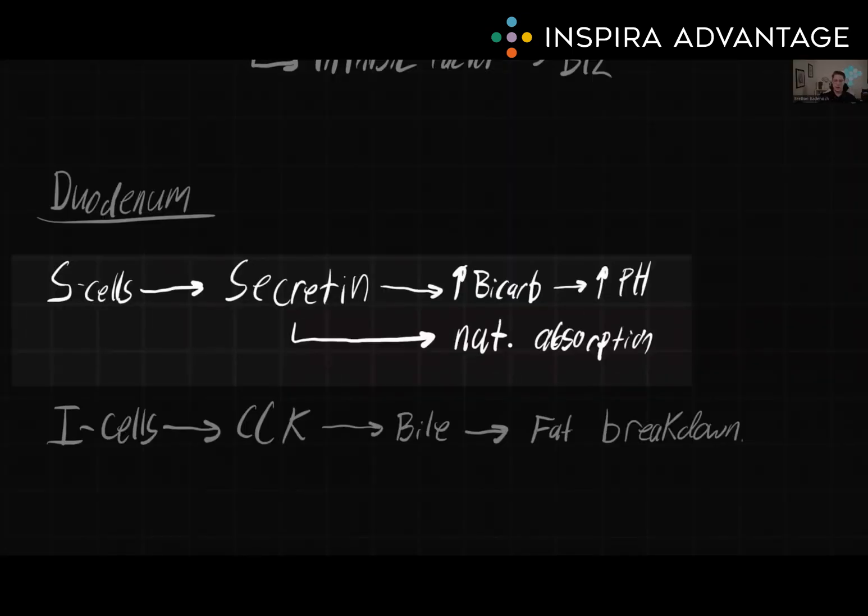Secretin is a hormone that is produced by S-cells in the duodenum. It stimulates the pancreas to release bicarbonate, which neutralizes stomach acid as it enters the small intestine. This helps to protect the small intestine from the acidic environment of the stomach.